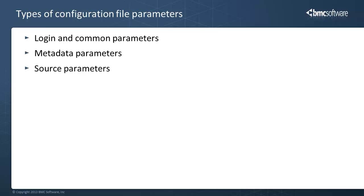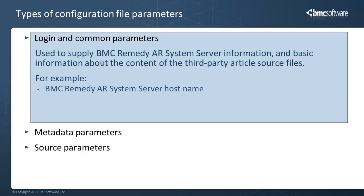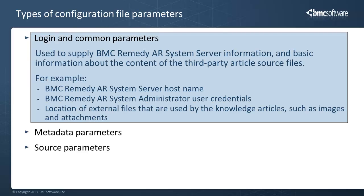Now you will learn more about the configuration file and the parameters that you can specify to control the conversion job. The config.properties file contains three sections, and each section contains a different type of parameter. The login and comments section contains parameters used to specify BMC Remedy AR server information, such as the host name and administrator credentials. These parameters also supply information about the content of the knowledge article source files, such as the location of image and attachment files used by the articles.